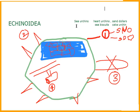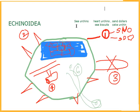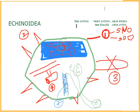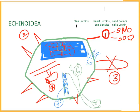The calcareous ossicles of the body unite to form a rigid test or corona or case — that is the fifth point. Sixth point: madreporite and anus are aboral in position. Seventh point: ambulacral grooves are closed. Eighth point: pedicellariae are three-jawed.